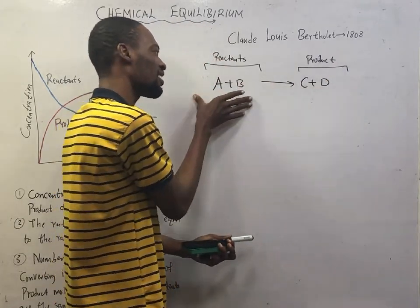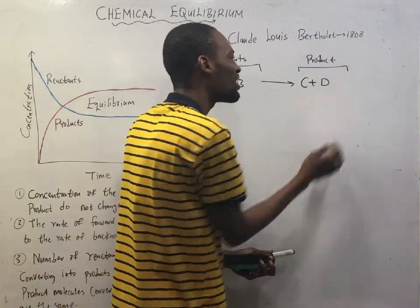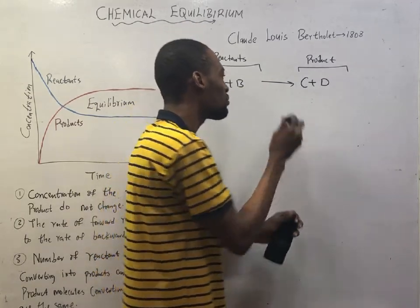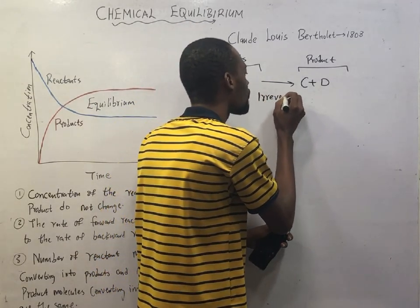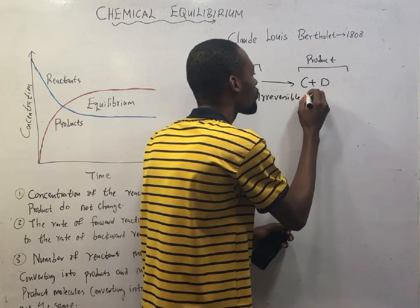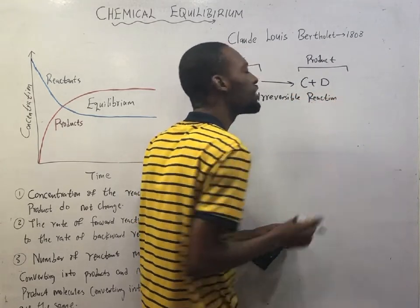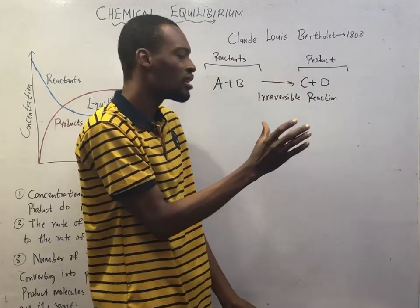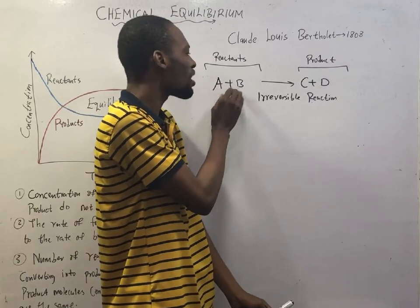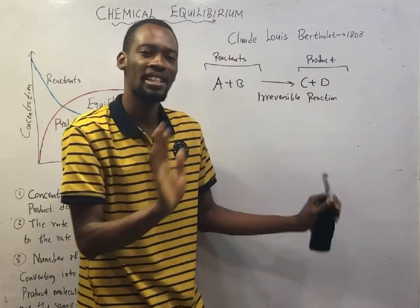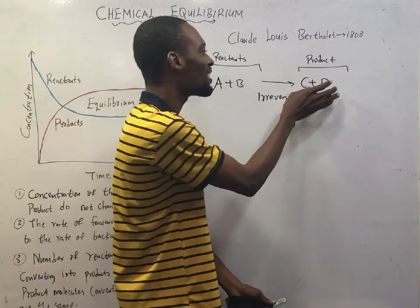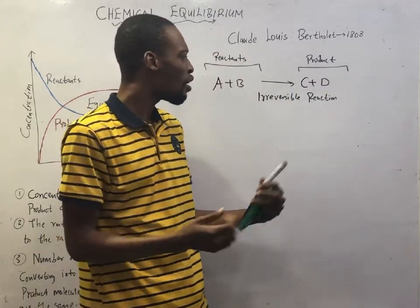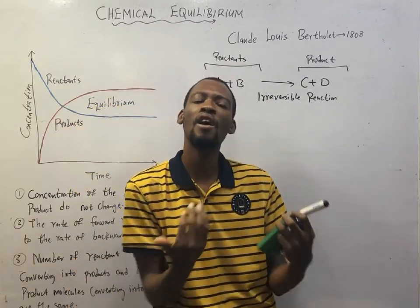The reactant part and the product part make up a chemical reaction. We can have one reactant giving two products, or two reactants giving one or three products. So long as reactants combine to form products, it is a chemical reaction. In this case, we are dealing with an irreversible reaction. An irreversible reaction is a type of reaction that takes place only in one direction.